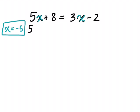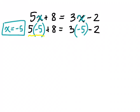So 5x means 5 times, so 5 times negative 5 plus 8 equals 3, instead of x, we're replacing it with the value of x that we thought it would be minus 2. Now we're just going to simplify both sides of the equation. What goes first? We have multiplication. What's a positive times a negative? Negative. So negative 25 plus 8 equals, and then we have a positive 3 times a negative 5 is negative 15 minus 2.